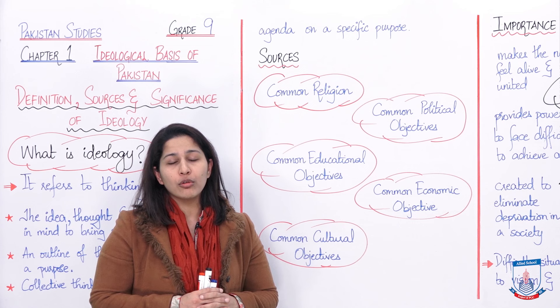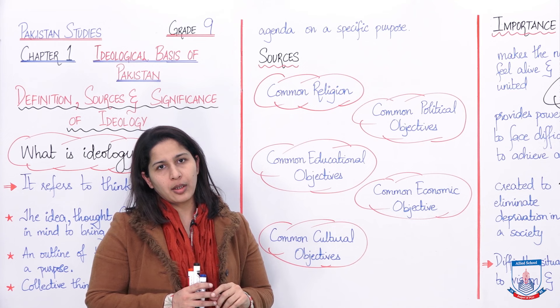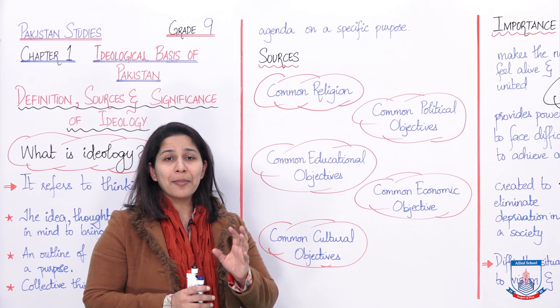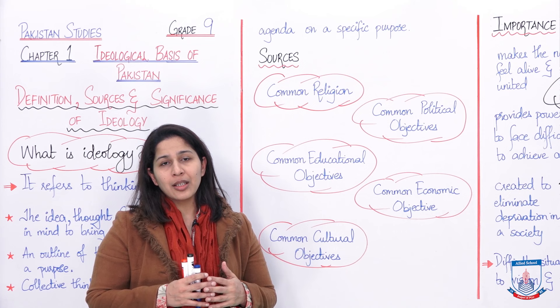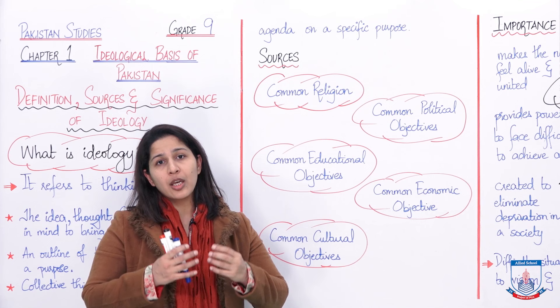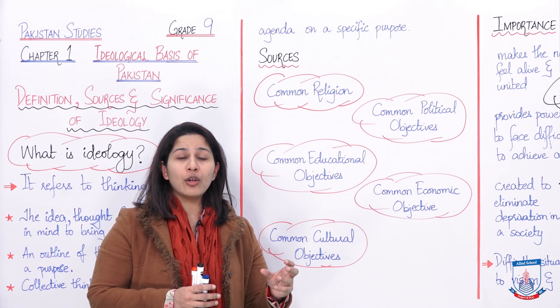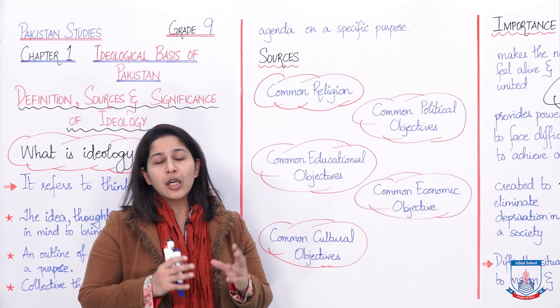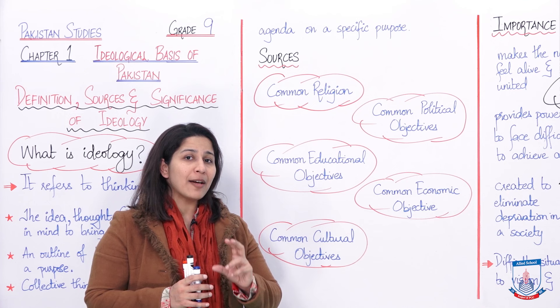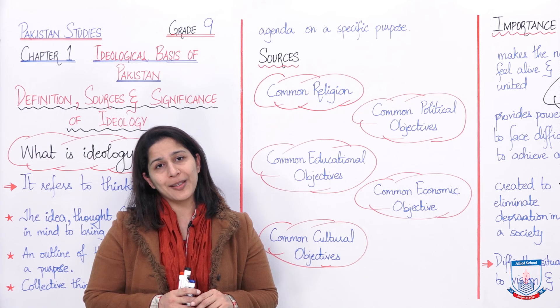If you look at all three of these definitions, they are all pointing towards the ideology of Pakistan — that Pakistan's ideology, as a nation or as a separate independent nation, why it came forward as an objective, how it came into existence, how it was implemented, and how we got an independent Pakistan today. But behind this, there was the hard work and sacrifices of so many people. By looking at the sources — the reasons why this ideology developed for a separate nation.